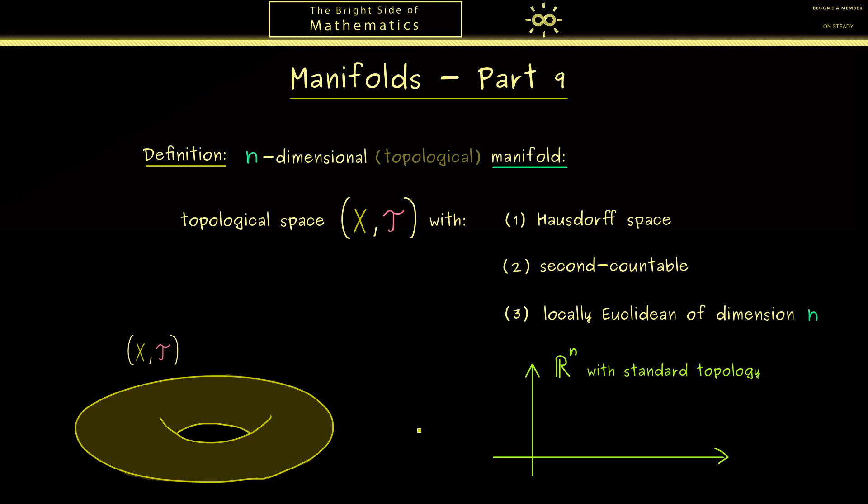So here you should see Euclidean of dimension n means that this space (X,T) is related to R^n with the standard topology. And the suitable term we have in topology would be the notion of a homeomorphism.